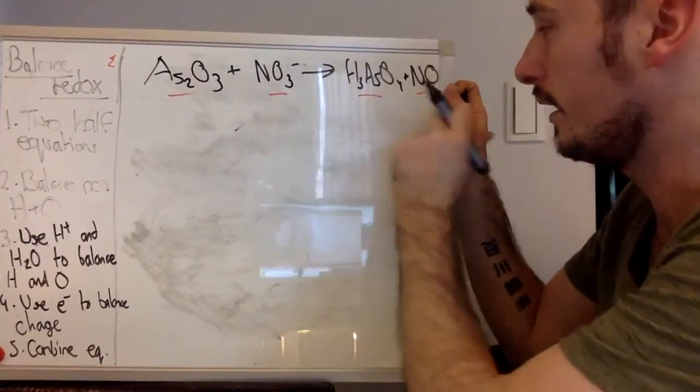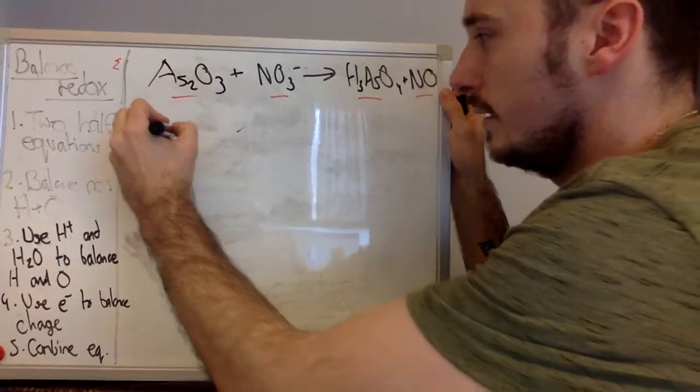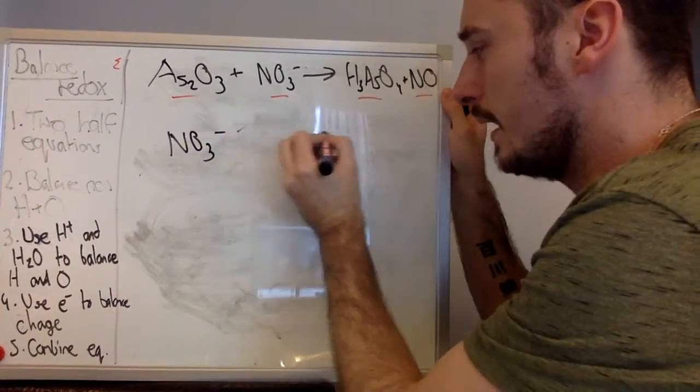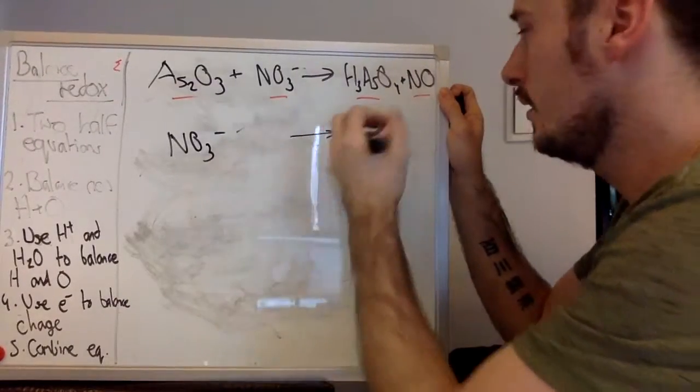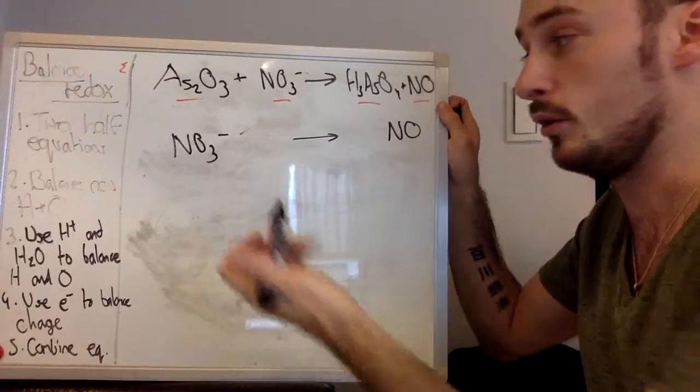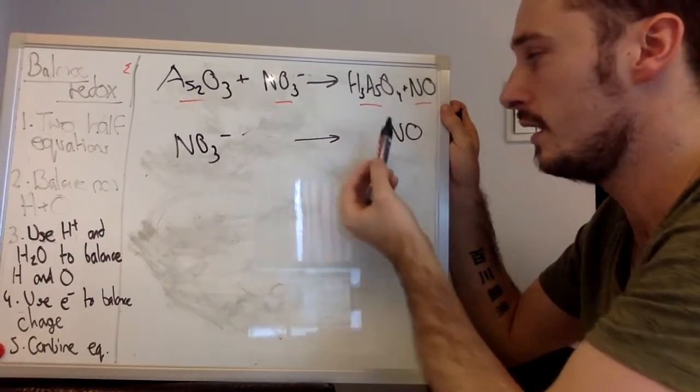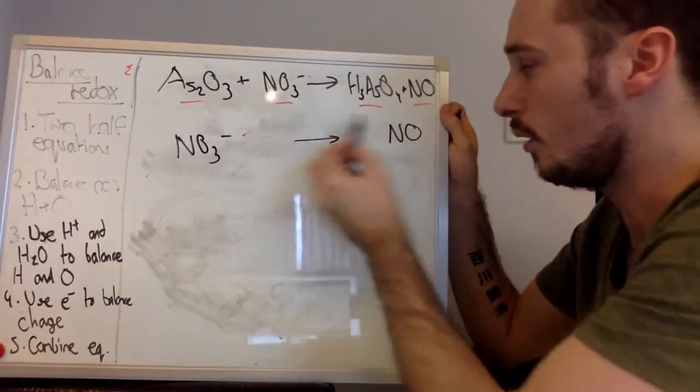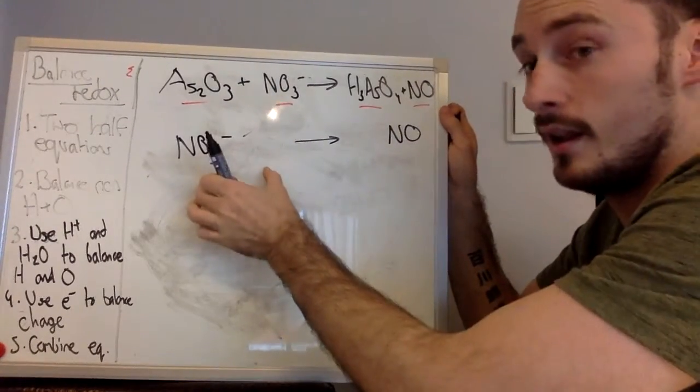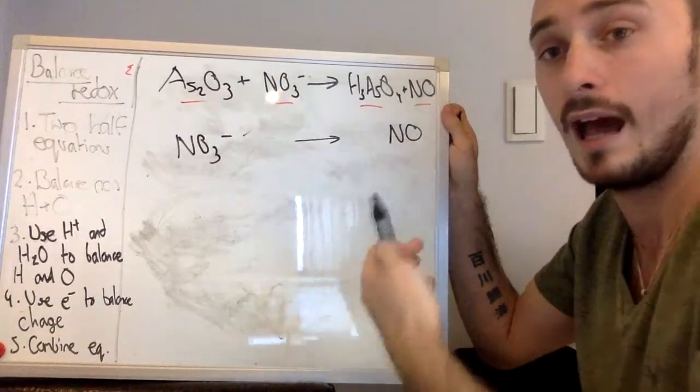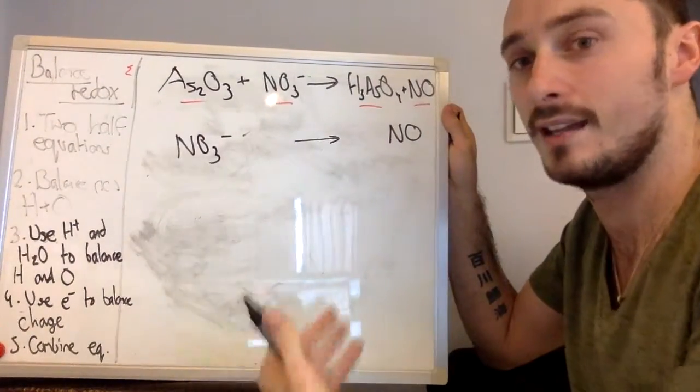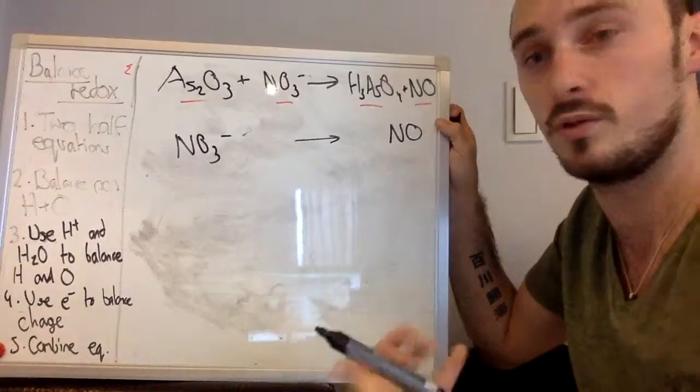So let's do NO3 minus and NO first, because that's a little bit easier. So NO3 minus, going to leave some space by the arrow to add extra things in, becoming NO. Now the first thing we can see is that we're losing two oxygens from this side to this side. Our nitrogens are already balanced, but now we need to get rid of two oxygens from this side. As such, the only thing that has oxygen, or the only form the oxygens can be given off as in an acidic solution is water.